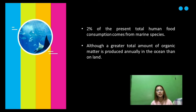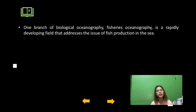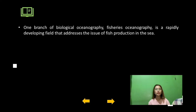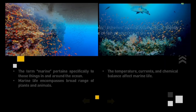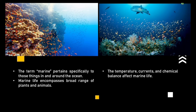This is an important nutritional source because it represents about 20 percent of the high-quality animal protein consumed in human diets. Although a greater total amount of organic matter is produced annually in the ocean compared to land, the economic utilization of marine production is much less effective. One branch of biological oceanography — fisheries oceanography — is a rapidly developing field that addresses the issue of fish production and overconsumption of marine life.